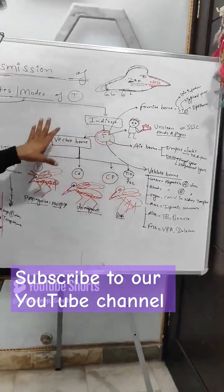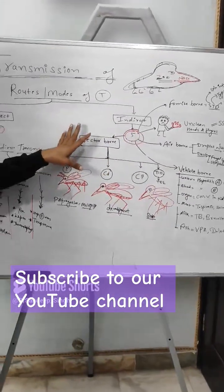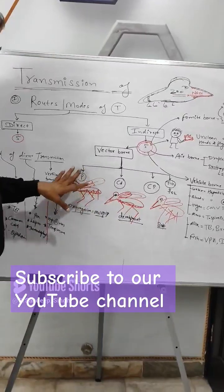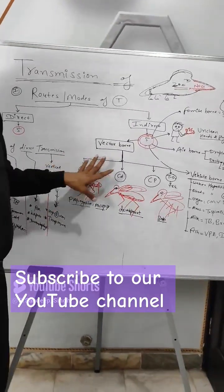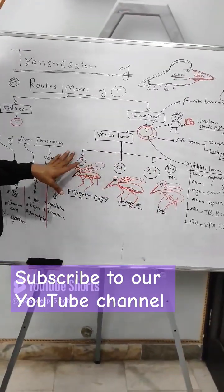Then the most important is vector-borne transmission. It is of further 4 subtypes.